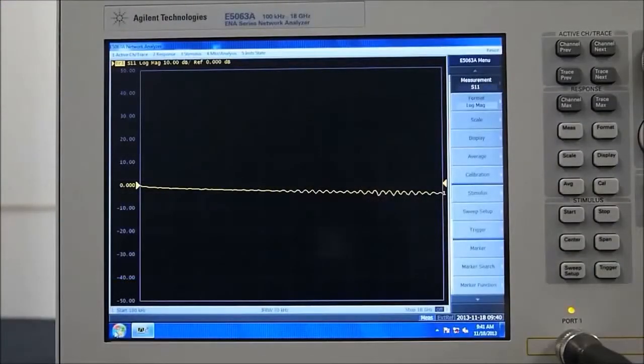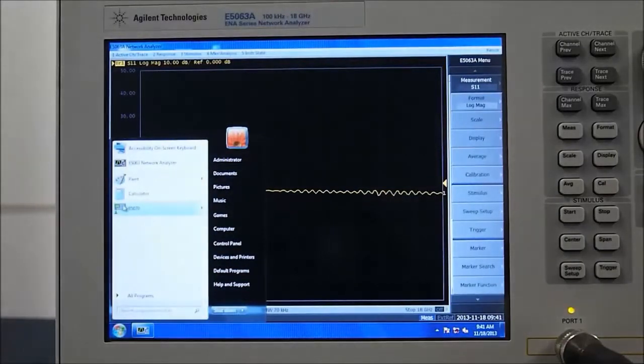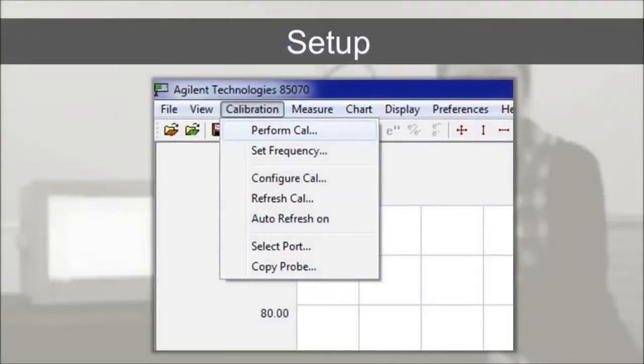I will demonstrate how to set up the test system and make measurements. First, start the 85070 measurement software. Click calibration, set frequency.